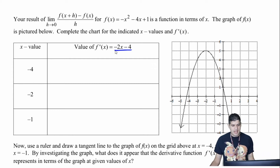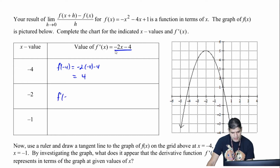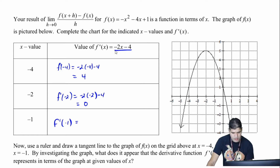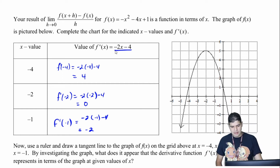So let's find f prime of negative 4. Negative 2 times negative 4 minus 4 gives us 8 minus 4, so positive 4. Then f prime of negative 2: negative 2 times negative 2 minus 4 gives us 4 minus 4, which is 0. And f prime of negative 1: negative 2 times negative 1 minus 4 gives us 2 minus 4, which is negative 2. So those are all of my results from f prime.